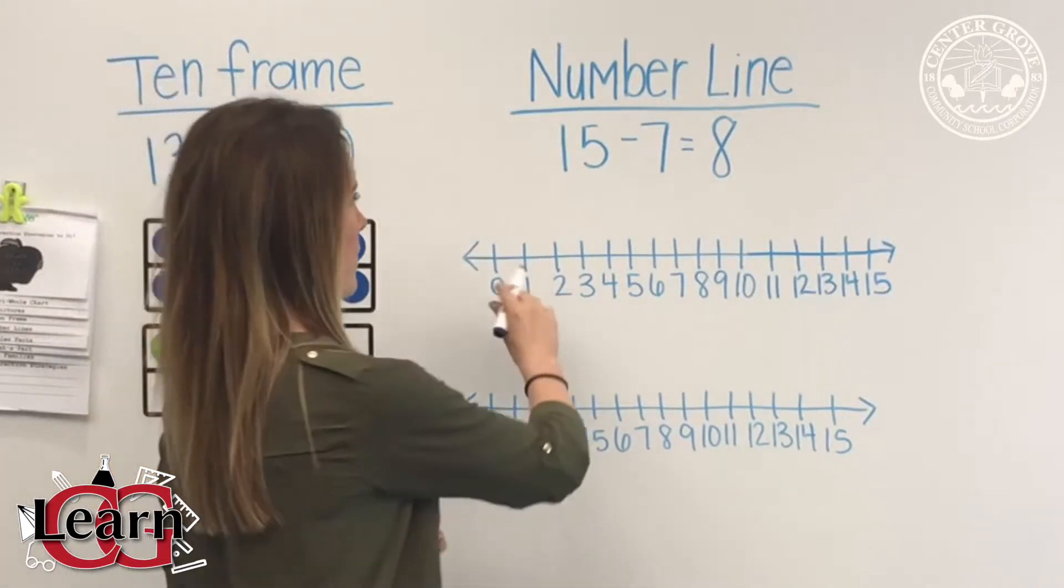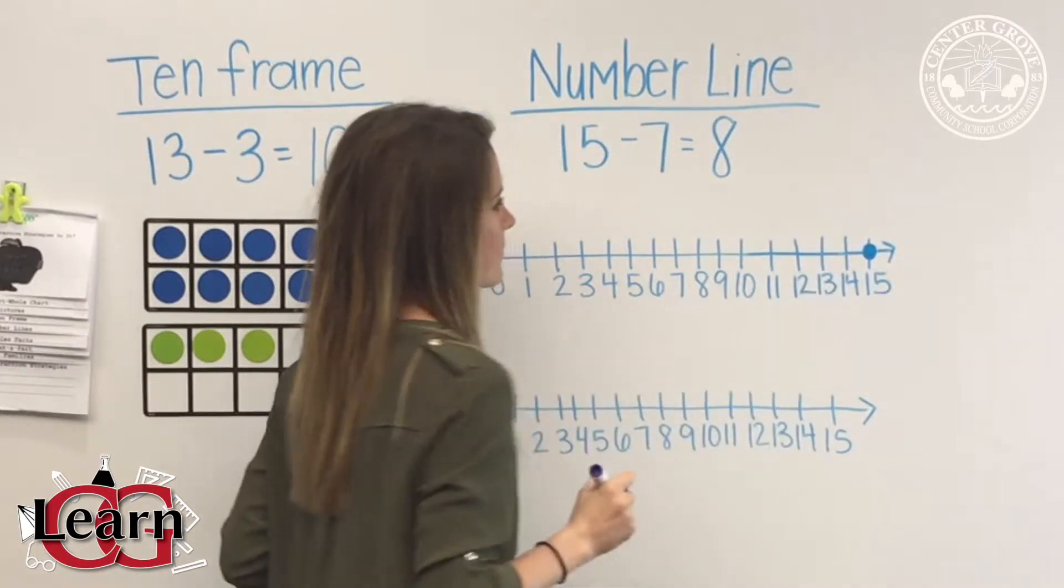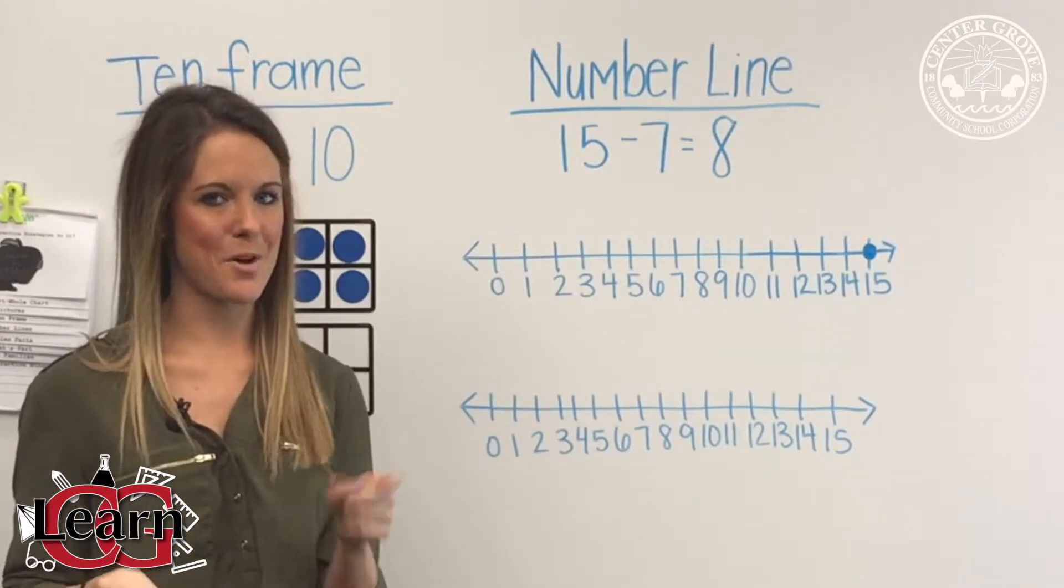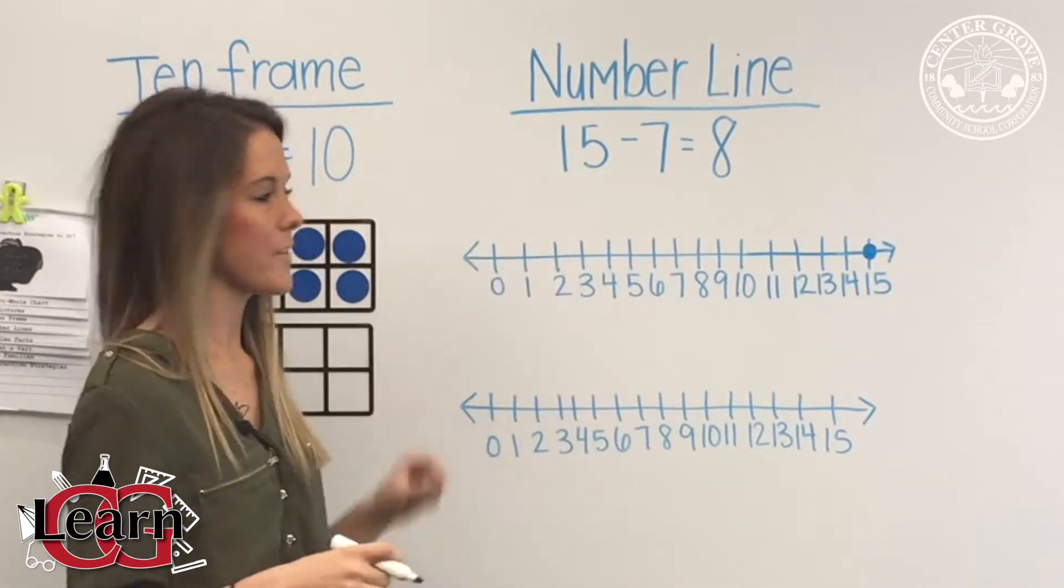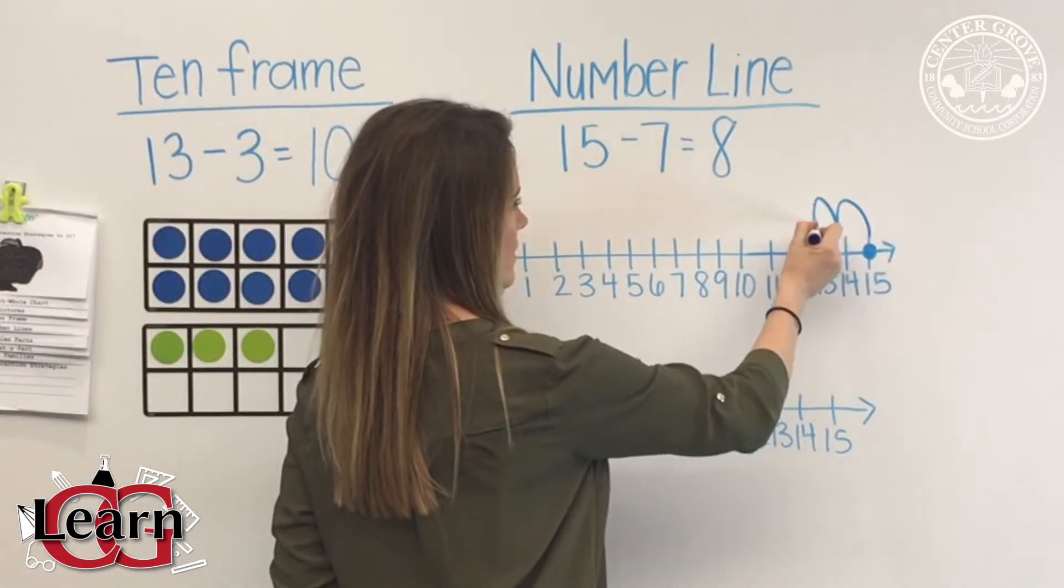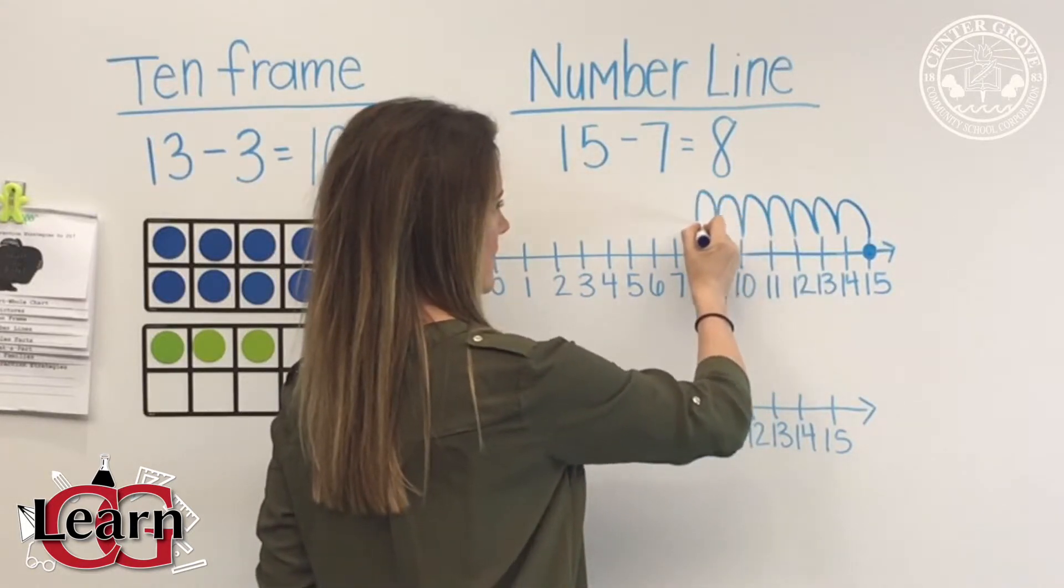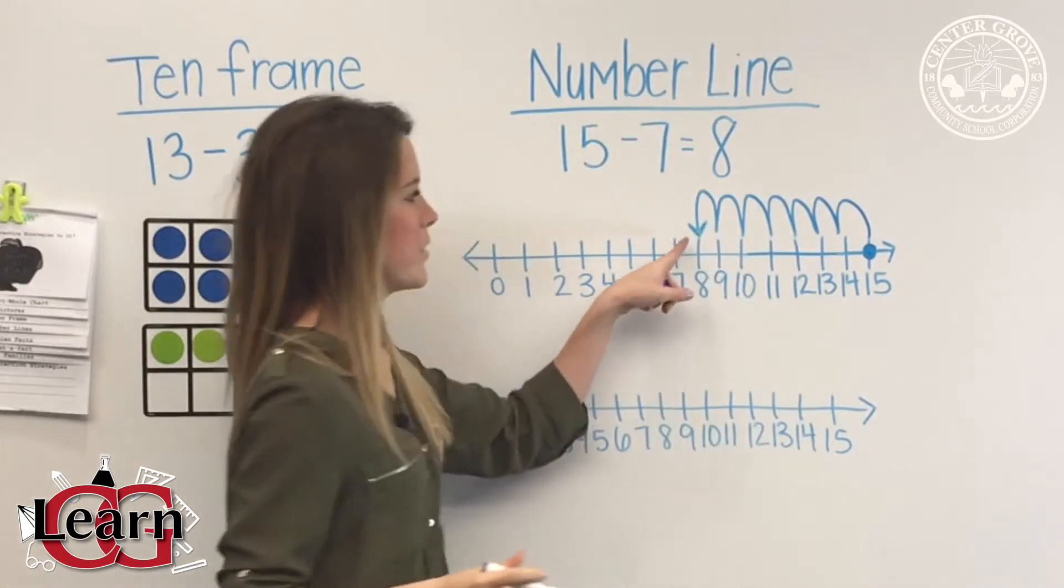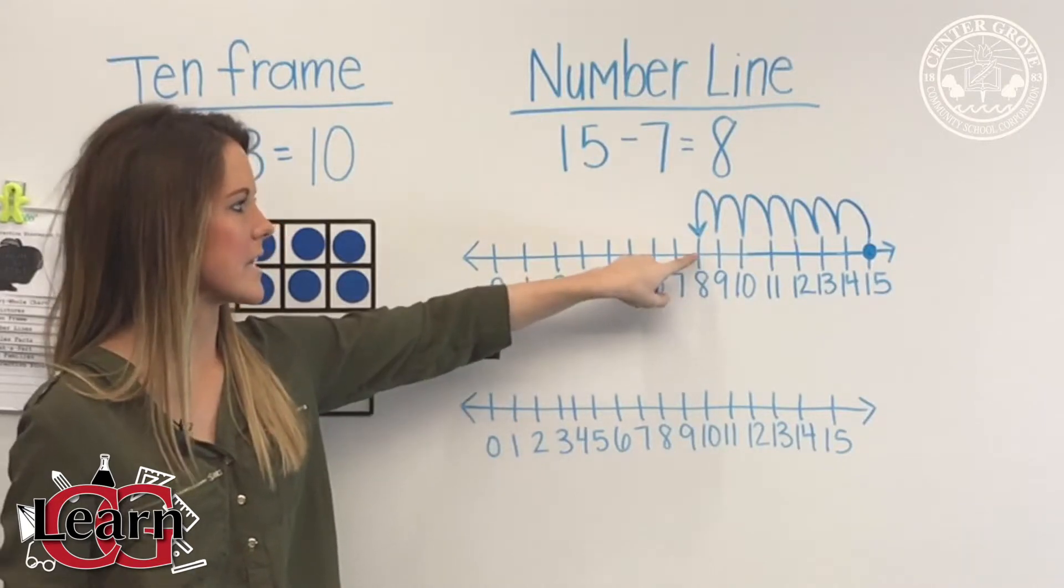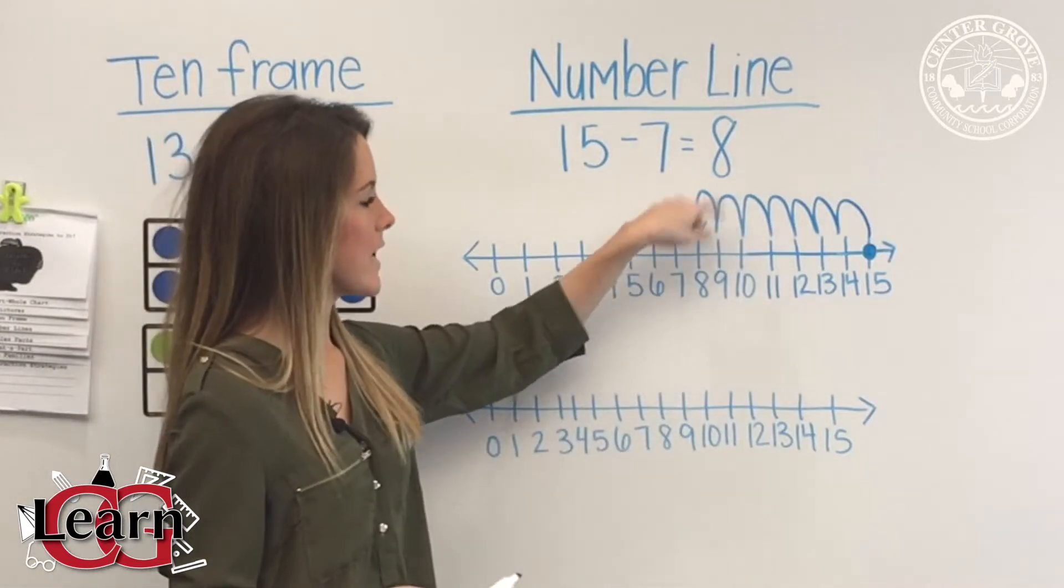When we are going to go backwards, we start with our biggest number. So we put our dot all the way over here on 15, and then we're taking away 7, so that means our number's going to get smaller, so we need to go backwards on the number line. I always tell the kids, make seven camel humps. So we're going to go 1, 2, 3, 4, 5, 6, 7. And then I always have them put that arrow where we end, because that way it's pointing to the number and it doesn't get confused with another mark somewhere on it. So when we do our seven camel humps backwards, we end at 8.